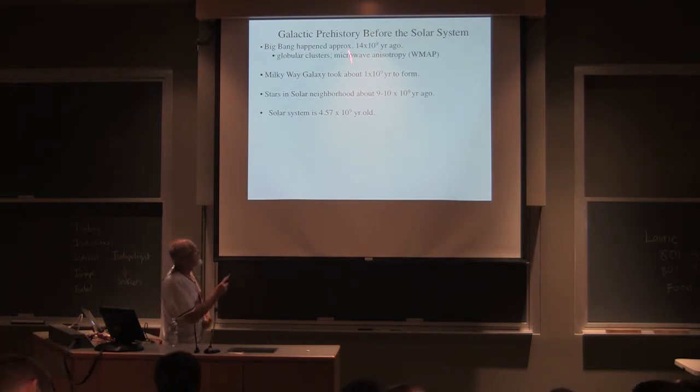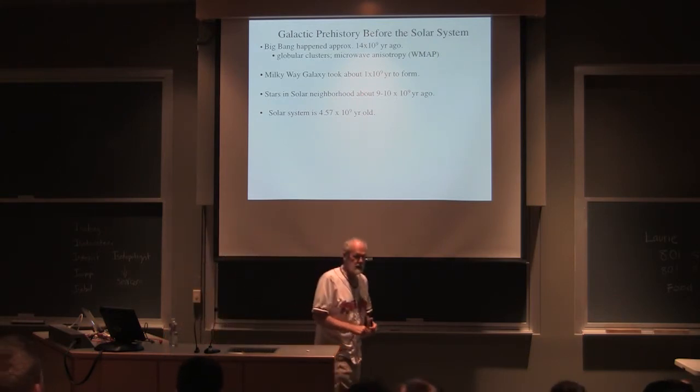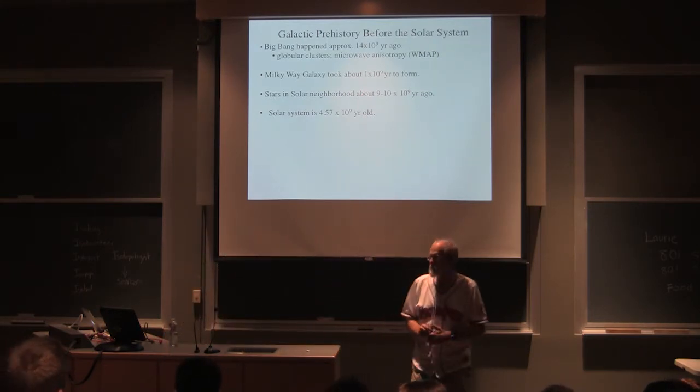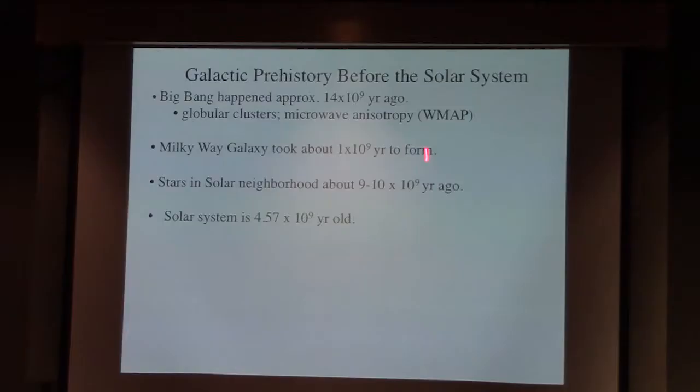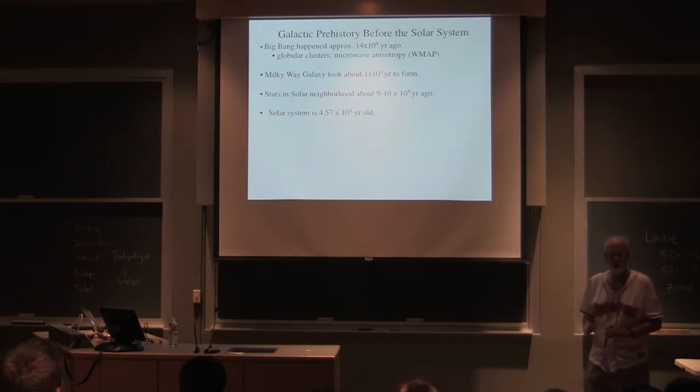The Big Bang, we think it's 13.8 billion years ago. We're now just being able to see this with, see these events with the Hubble telescope. Our Milky Way galaxy took about a billion years to form, and the stars in our neighborhood, they formed about nine or so billion years ago. And this is the important thing - our solar system is this age, 4.57 billion years ago.